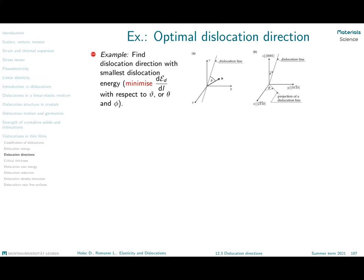So what can we learn from here? One thing is we can think about the optimum geometrical configuration. The energy obviously depends on the mutual relationship between the dislocation line direction and the Burgers vector, which in the case of isotropic material is given purely by the angle theta between those two. If you remember the formula, the function had in the denominator one minus nu times cosine squared theta.